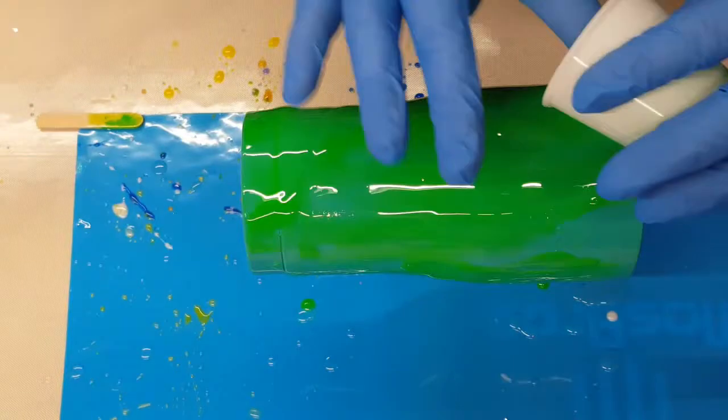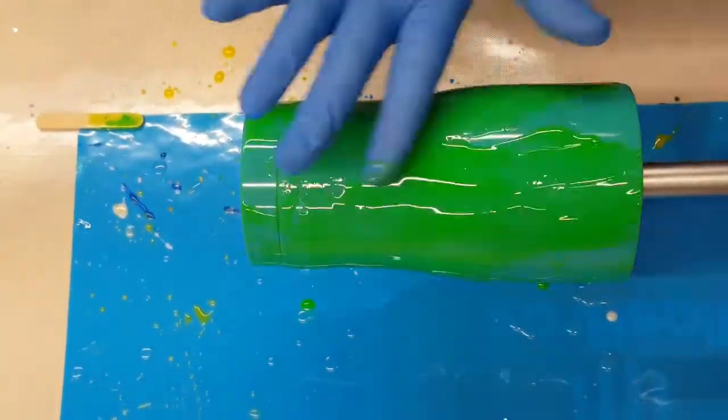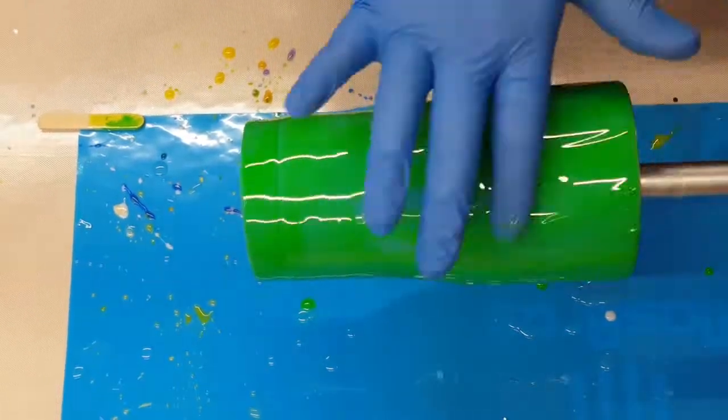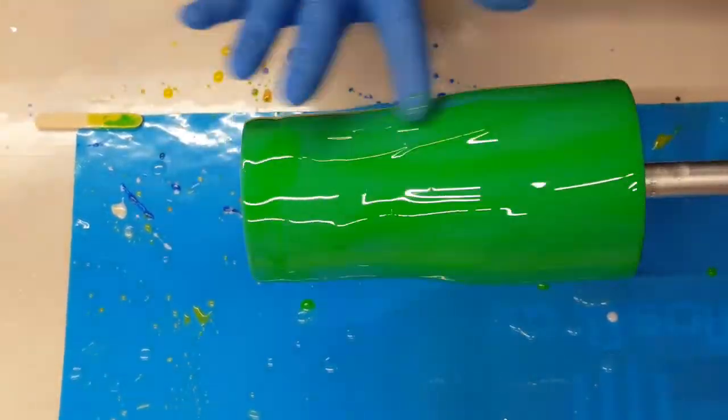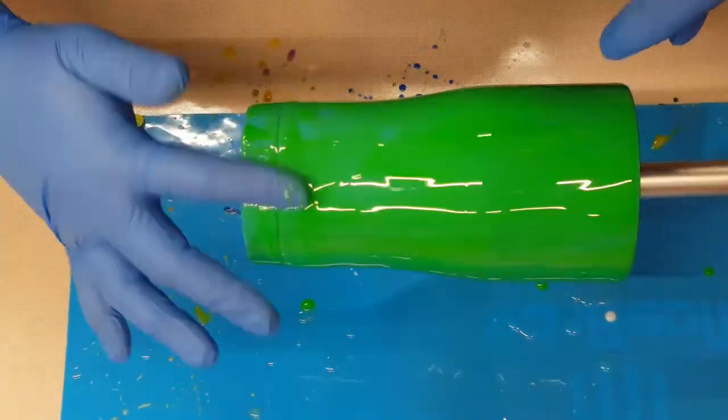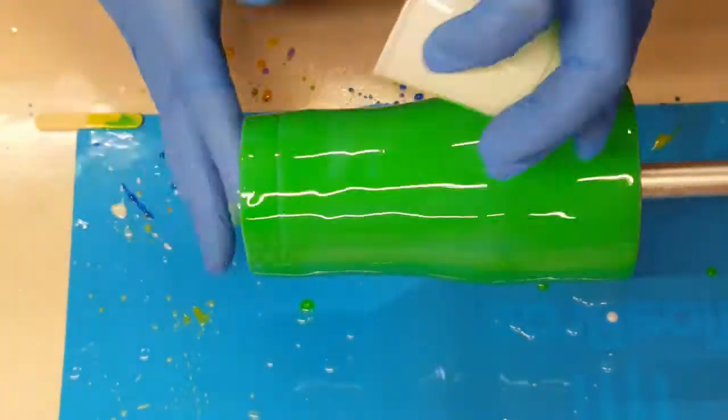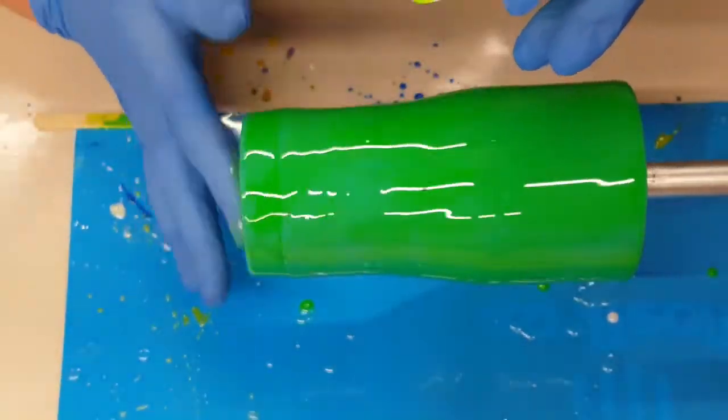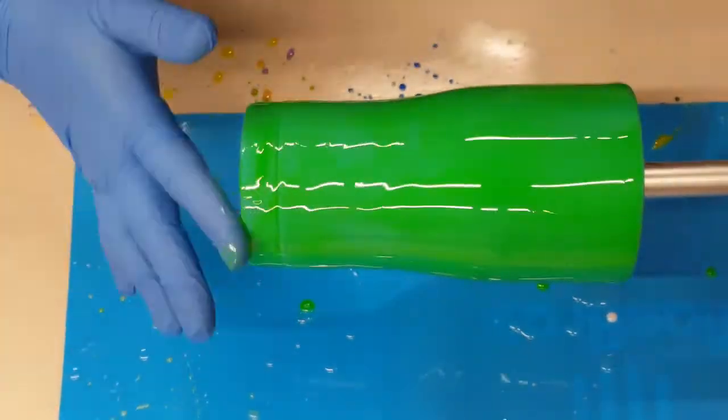Now I am coming in with some green. This green is like a fluorescent neon green that I've mixed in my epoxy and I am just covering the whole tumbler with this color. Once I get that covered, I'm going to come in with my torch to get any bubbles.